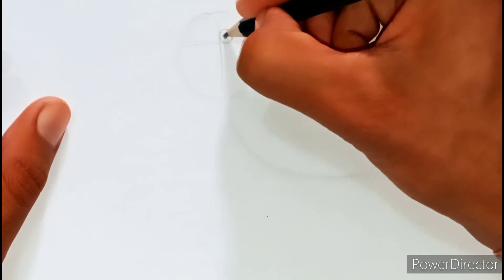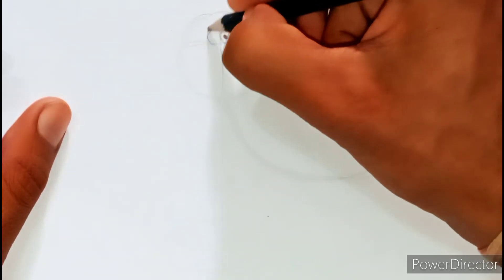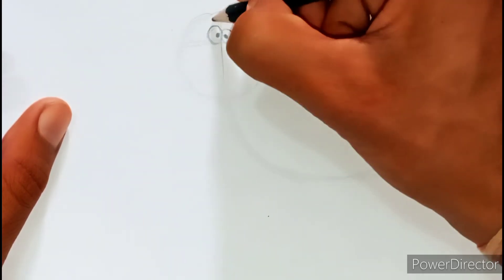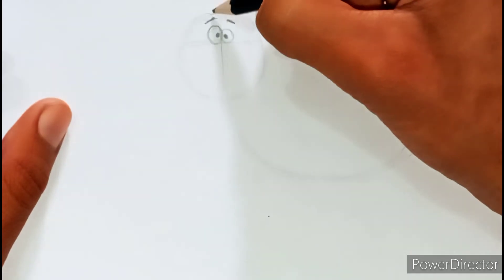Now, the eyes, circle shape and black dot in the circle. An equal shape, so that it look funny.